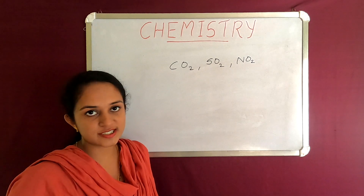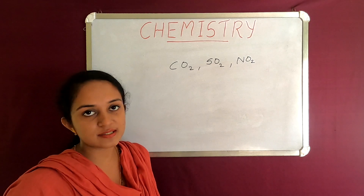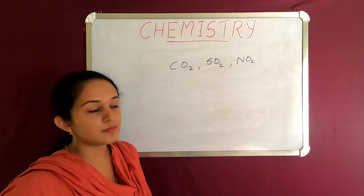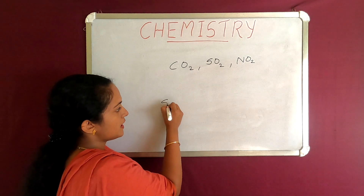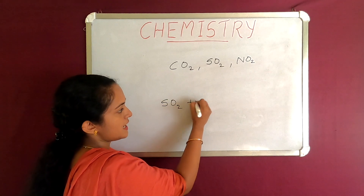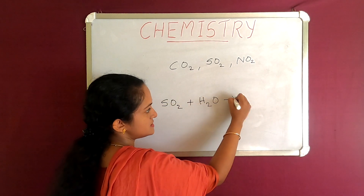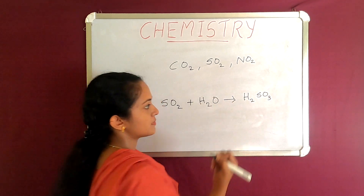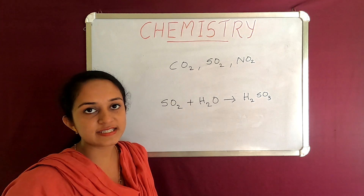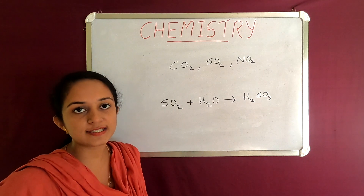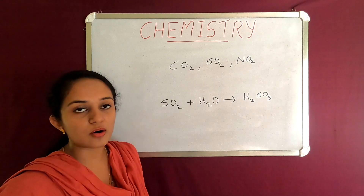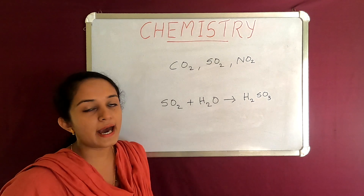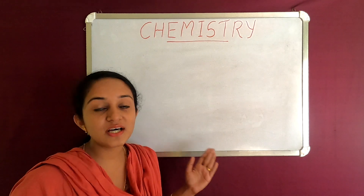Non-metallic oxides dissolved in water form acids. For example, SO₂ plus H₂O gives H₂SO₃. This is a dibasic acid. Metallic oxides are water-moderated to form acid compounds.